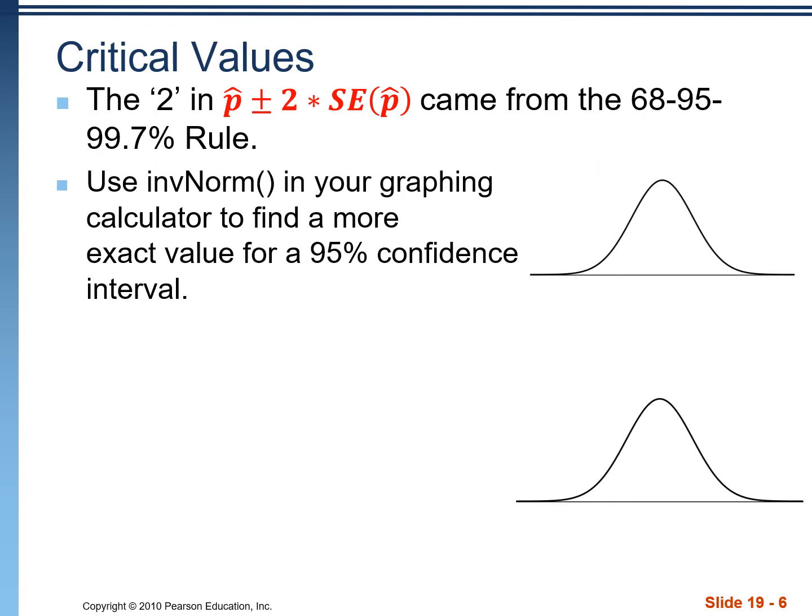For a 95% confidence interval, I keep saying we move two standard errors away from the sample statistic. That two comes from the 68-95-99.7 rule. There's a more precise value we can use — the two is really just an estimate for quick calculations. If we use inverse normal in our graphing calculator, we get a more exact value for a 95% confidence interval.